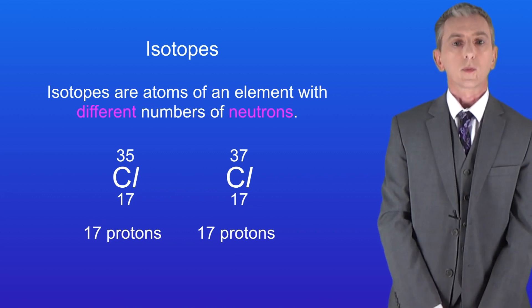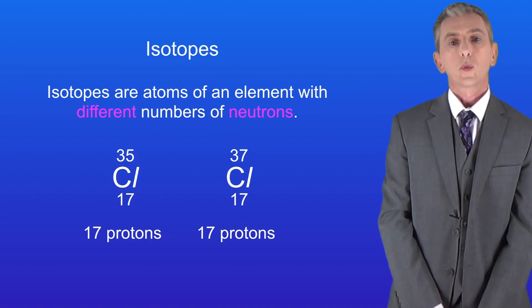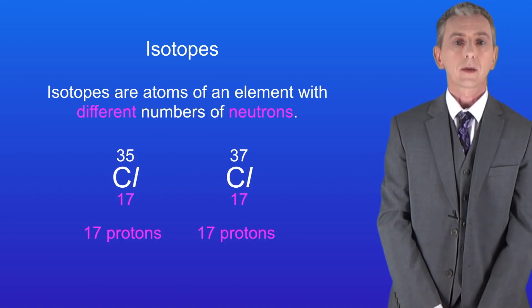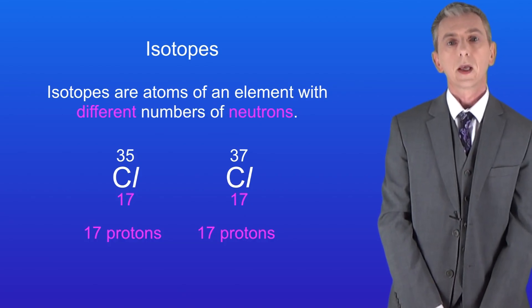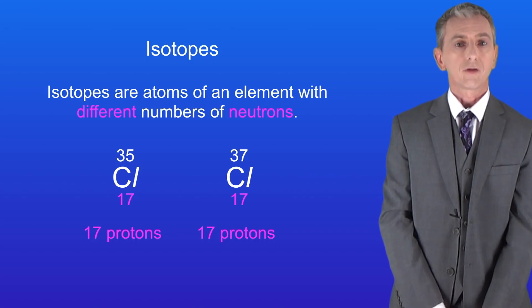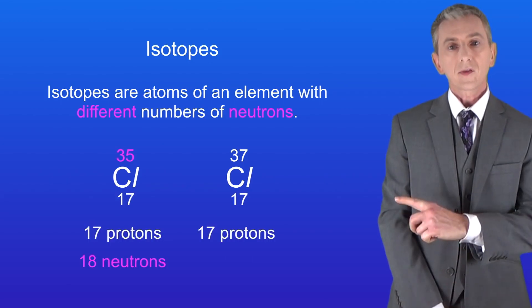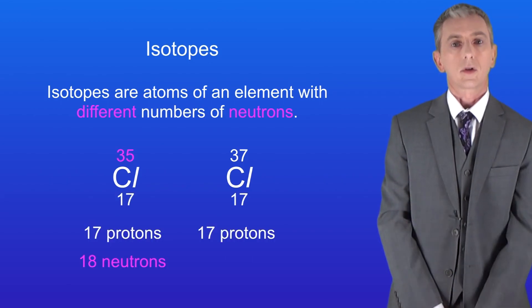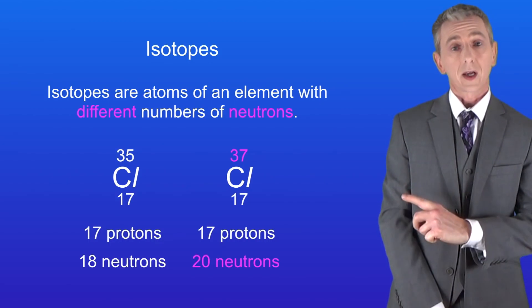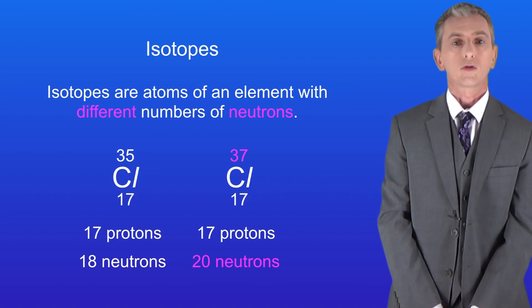Both of these isotopes have an atomic number of 17, which means that both have got 17 protons in their nucleus. However, the isotopes have got different mass numbers telling us that they've got different numbers of neutrons. This isotope contains 18 neutrons whereas this isotope contains 20 neutrons.